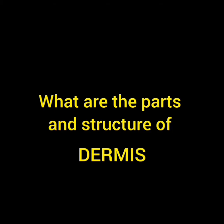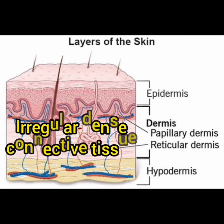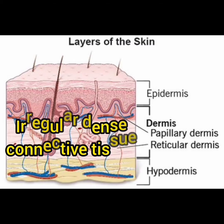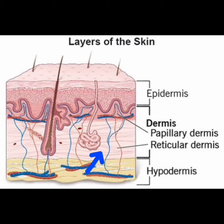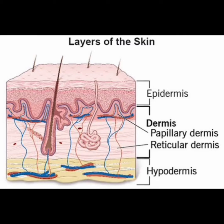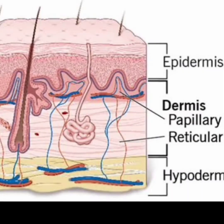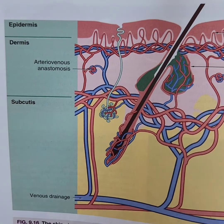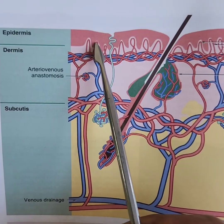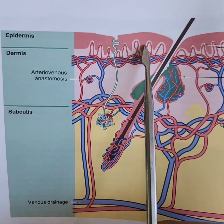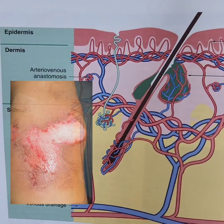Dermis is irregularly arranged dense connective tissue. An irregular network of collagen fibers makes it reticular dermis. The part of the dermis projecting towards the epidermis like papillae is the papillary dermis. Because of its irregular collagen and tough nature, the dermis of lower animals is used as leather after processing. Vascular networks are seen in the papillary dermis and also in the deeper dermis — abrasional injuries at this level can cut the tips of papillary dermis, which is vascular, showing pointed bleeding spots on the injury.